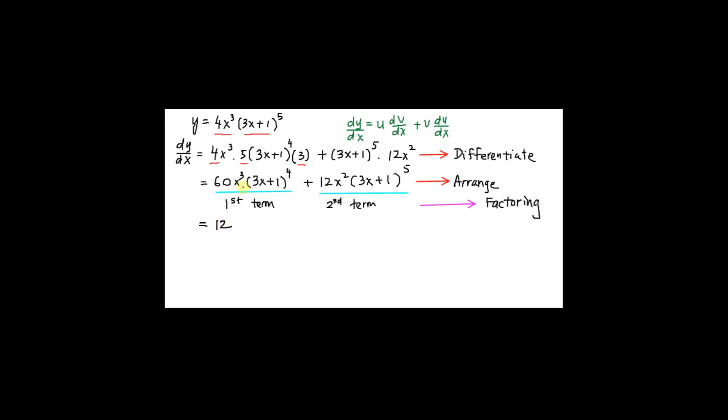Next, I look at x power 3 and x power 2. Always pull up the lowest power, that is my x squared. Then I have 3x plus 1 power 4 and 3x plus 1 power 5. Again, I am going to pull up 3x plus 1 power 4, that is the lowest power.